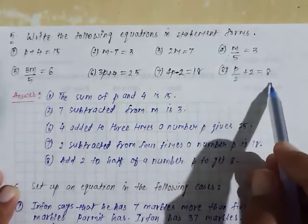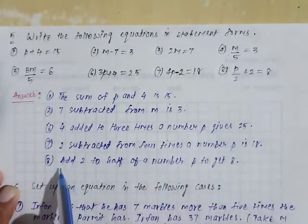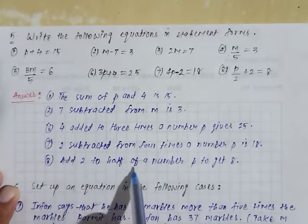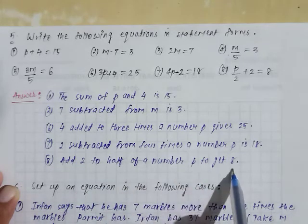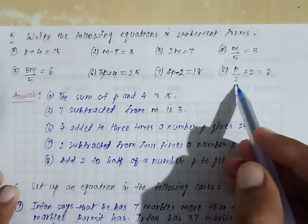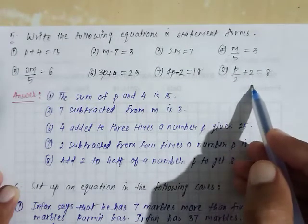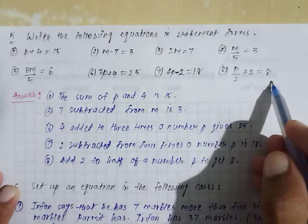Last, p by 2 plus 2 is equal to 8. You can write: add 2 to half of a number p to get 8. So half of p, if we add 2, what value do we get? 8.